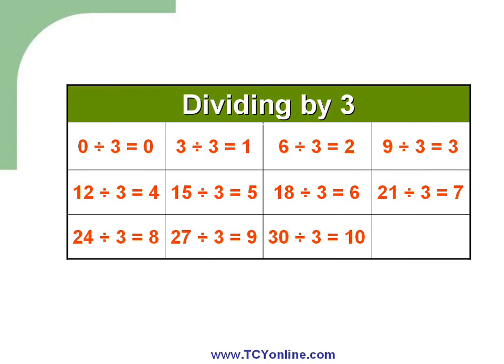Similarly, let's see the division table for the number 3. When 0 is divided by 3 we get 0; when 3 is divided by 3 we get 1; when 6 is divided by 3 we get 2; when 9 is divided by 3 we get 3. The rest of the values are given in the table. We can also verify these using the repeated subtraction method.